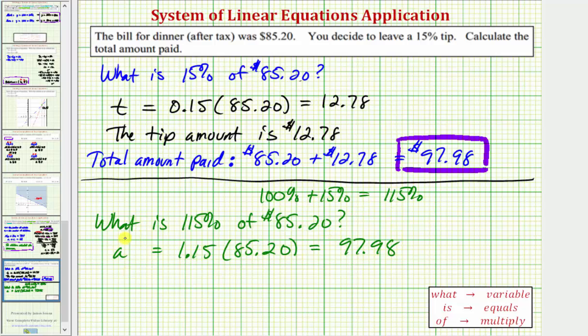So again, using this method, we're able to determine the total amount paid, once again, is 97 dollars and 98 cents. But using the second method, we're able to determine the final answer in one step, rather than two. But of course, both methods are valid. I hope you found this helpful.